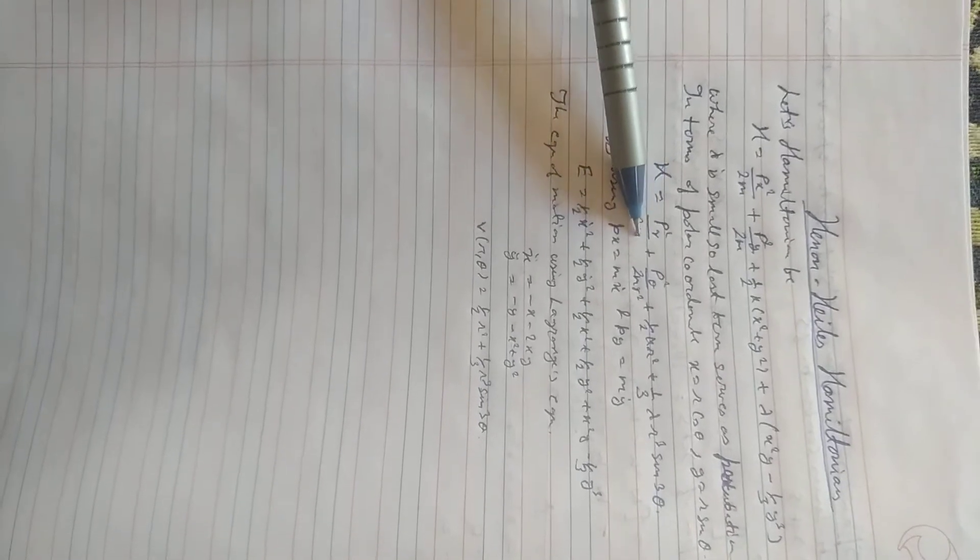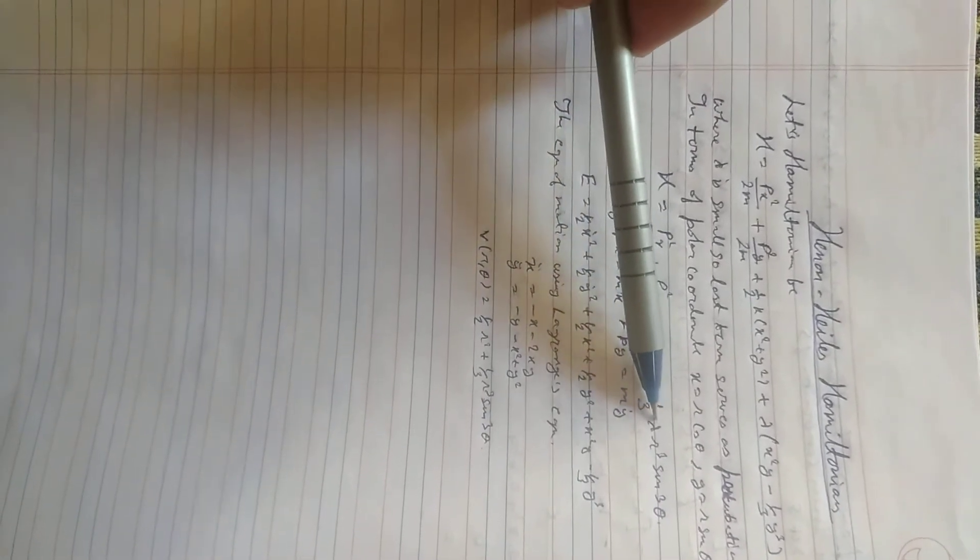H equals P square r by 2m P square theta by 2m r square plus half k r square plus 1 by 3 lambda r cube sin theta sin 3 theta.